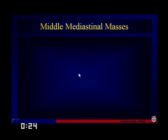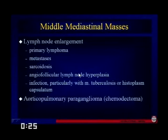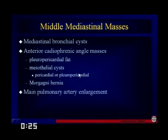In middle mediastinal masses, the most common things are adenopathy from lymphoma or Hodgkin's. Metastases are frequent. Sarcoid can be a very common cause of mediastinal adenopathy. Other less common things include angiofollicular lymph node hyperplasia or Castleman's disease, or infectious causes. Less common things include a chemodectoma. Middle mediastinal masses also include bronchial cysts, AP window masses, aorticocardiophrenic angle masses such as pleuropericardial fat pads, epicardial cysts, Morgagni hernias, or enlarged main pulmonary artery mistaken for a mass.